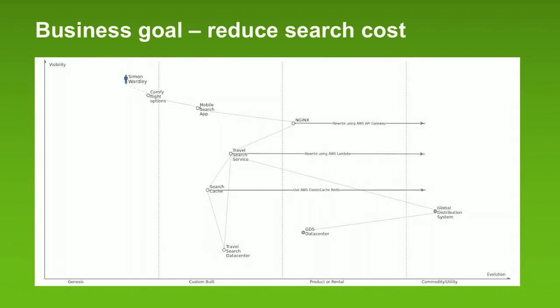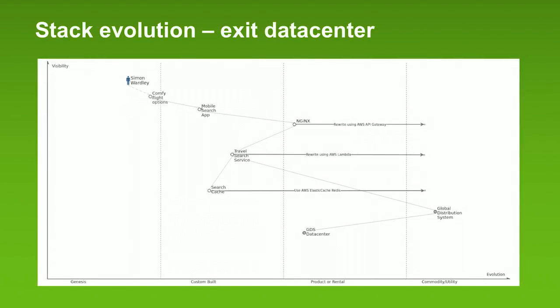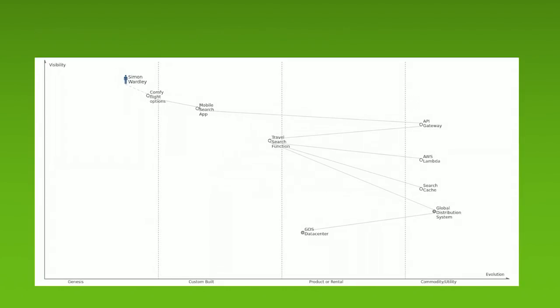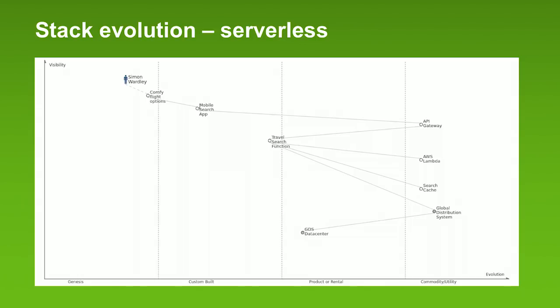So here's the next thing we're going to do with the map: we're going to show movement on the map, taking these three sections of the service and migrating them over to utilities. We're taking Nginx and rewriting it using API Gateway. We're taking the travel search service and rewriting it using AWS Lambda. And we're moving the search cache to ElastiCache Redis. Once we've done that, we no longer have a dependency on the data center, which means the search application is no longer data center-based — it's now completely cloud-based. Here's the new serverless evolution of this stack. We still have the travel search function, which is custom built, but everything else is now commodity or as-a-service. That made it cheaper to run, but it's still a little slow.